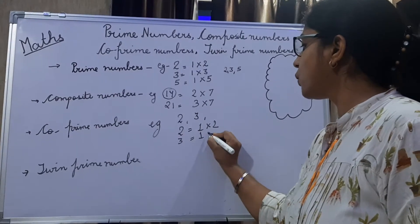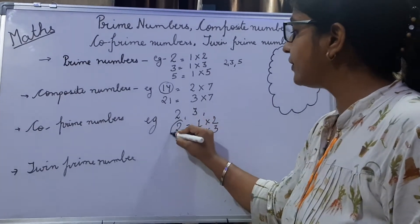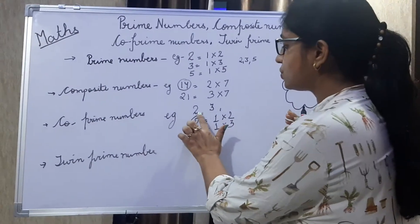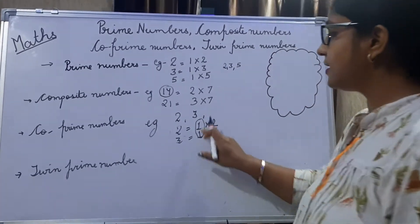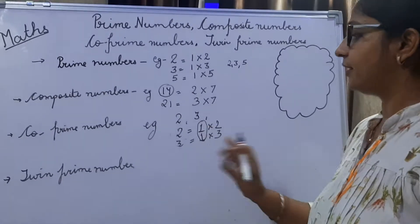Three has one and three. So two and three, sorry, two and three have only one as a common factor. Can you see this? Only one as a common factor.